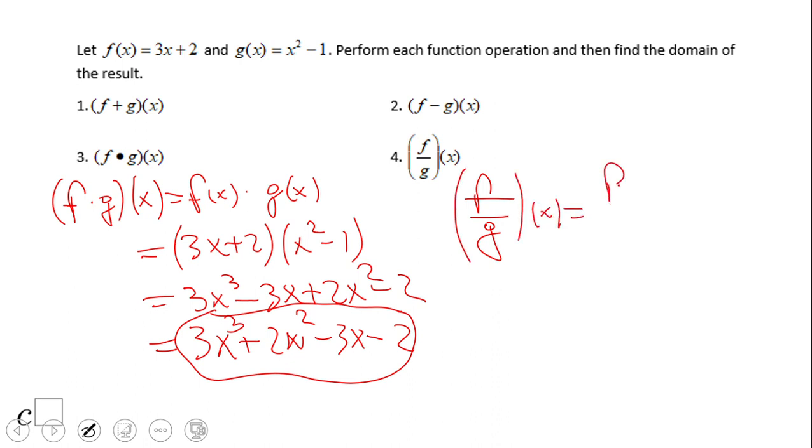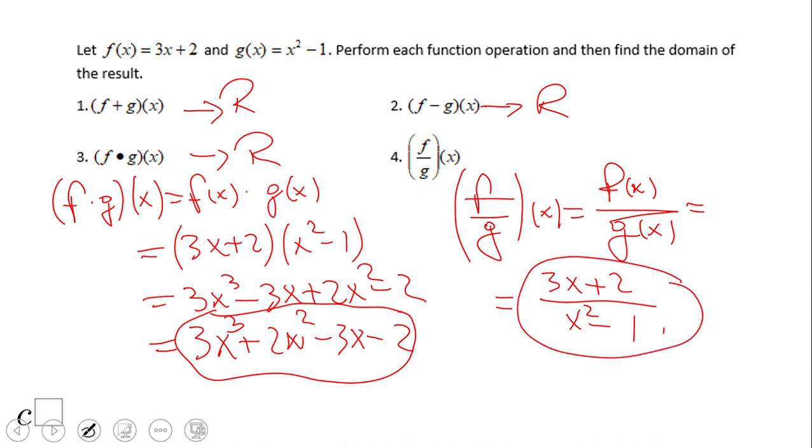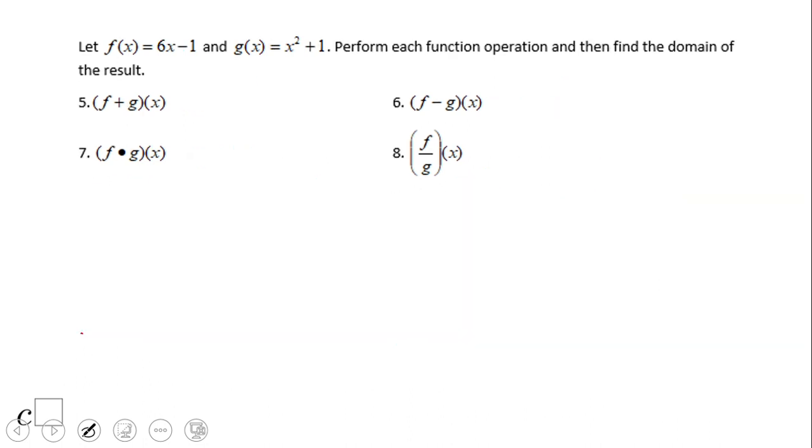Now f divided by g of x is obviously f of x over g of x. In this case it's going to be 3x plus 2 over x squared minus 1. Here we're talking about the domain. For this type of problem we need to be careful about the domain. The domain of f and g are all real numbers, so all real numbers here and here. The only one we need to be careful is this one, because we have a fraction. The domain is all real numbers, but x has to be different than plus and minus one, because plus and minus one makes the denominator zero.